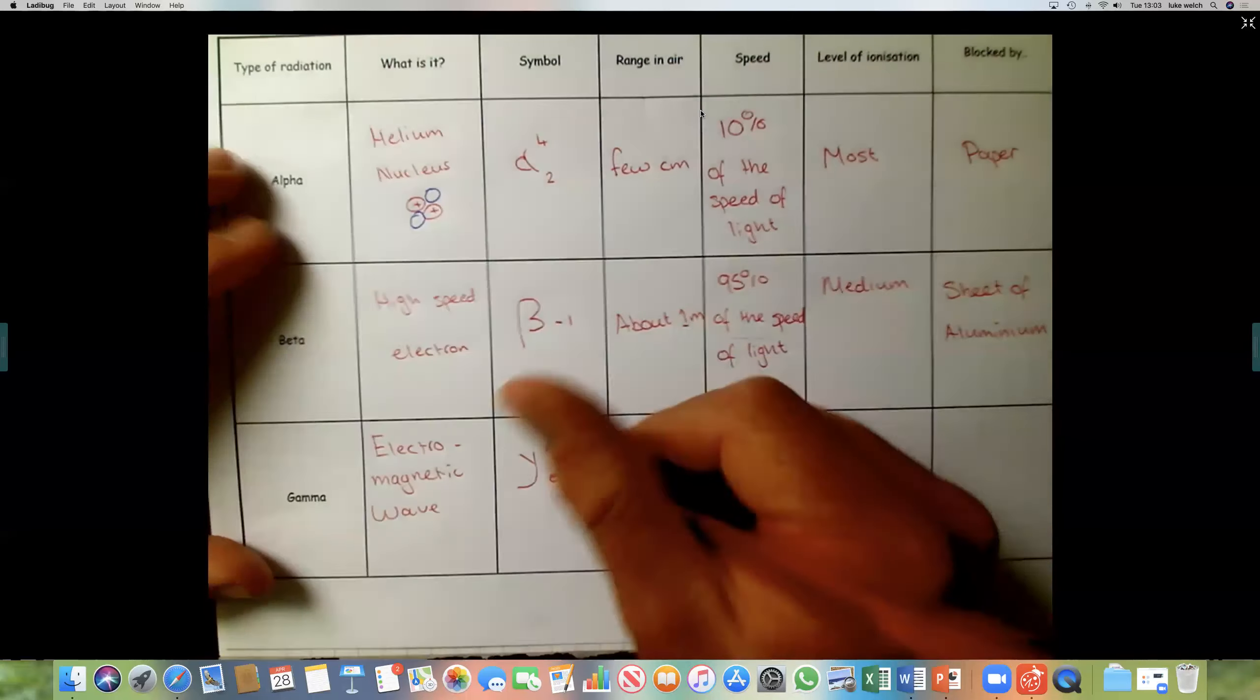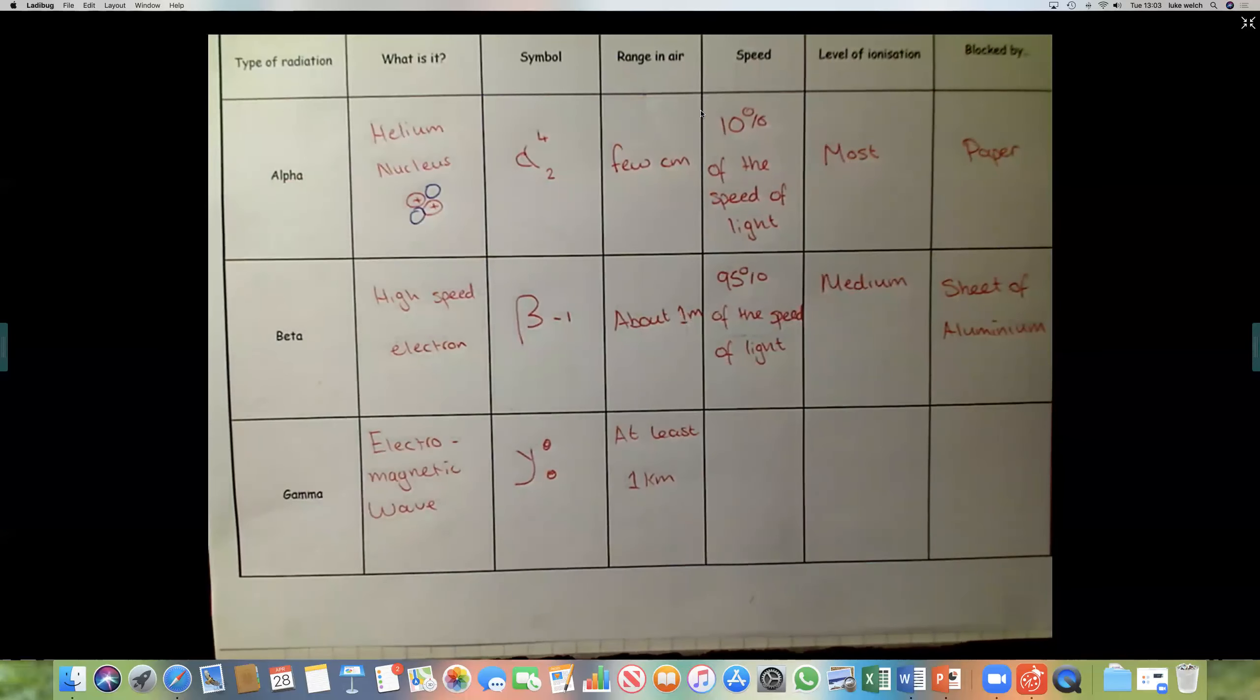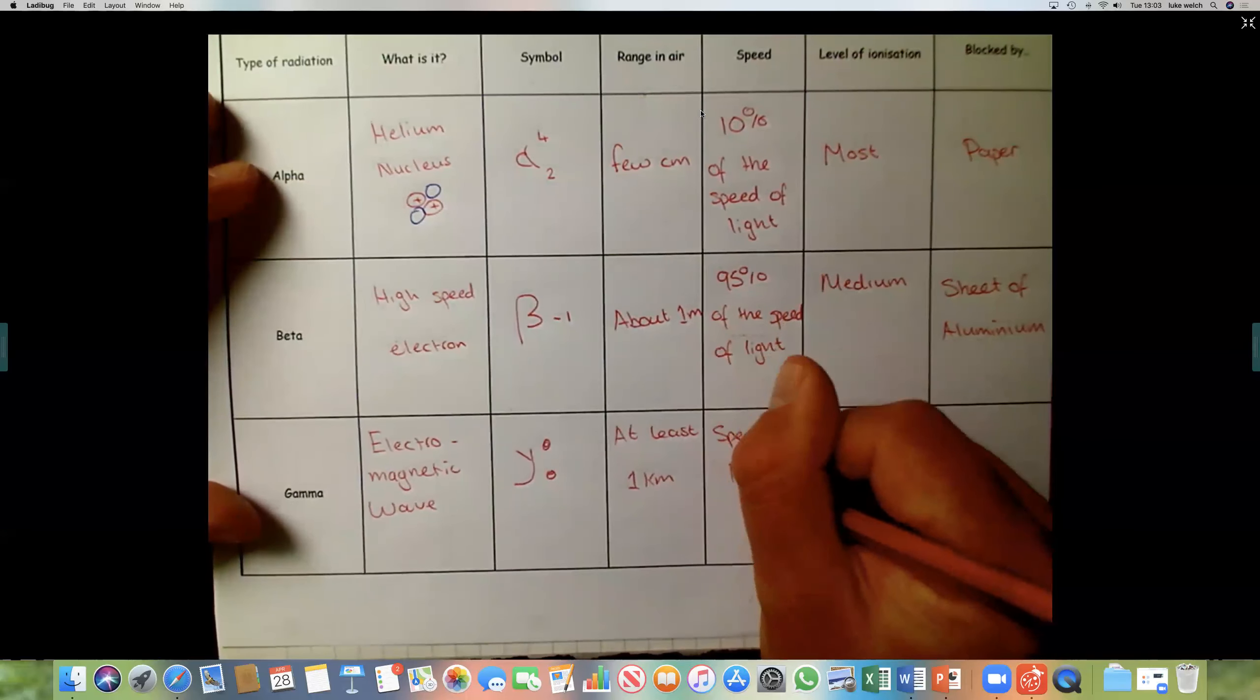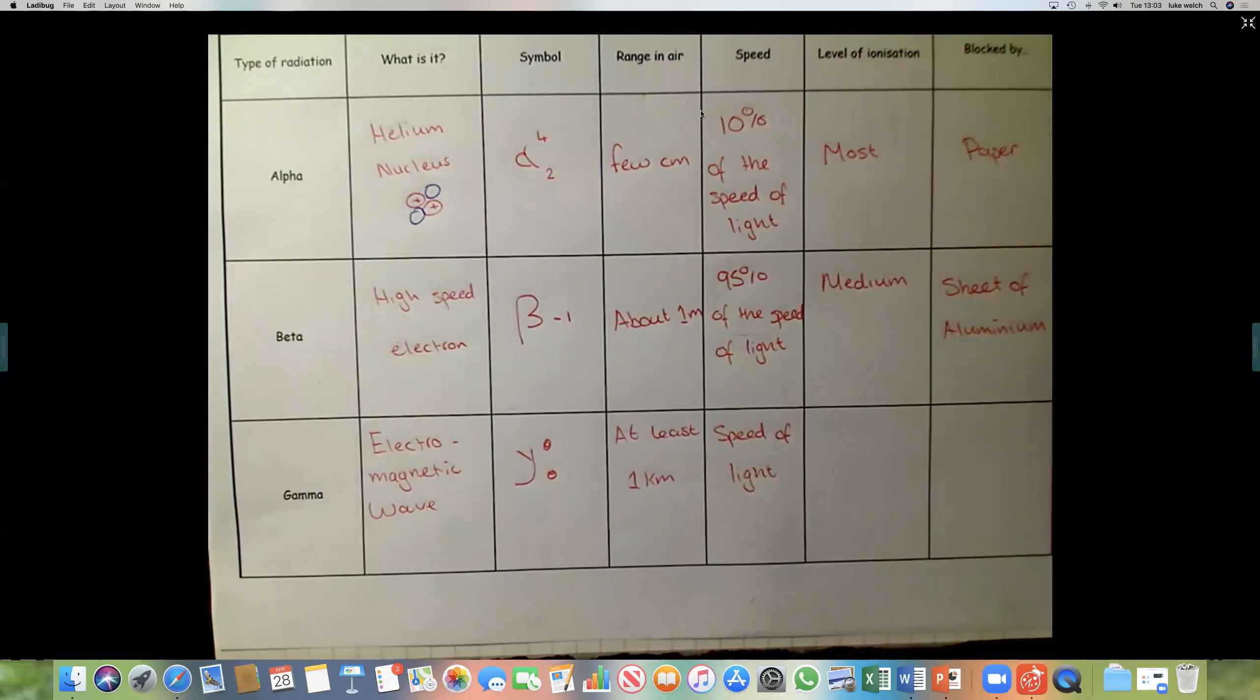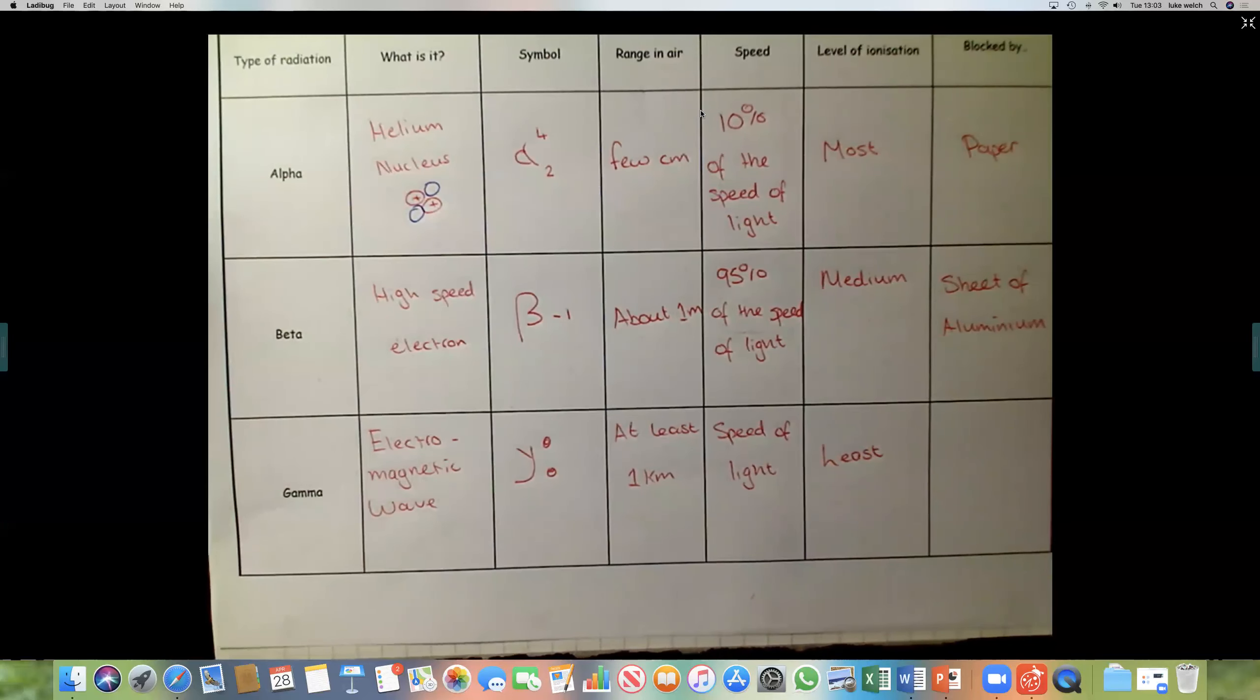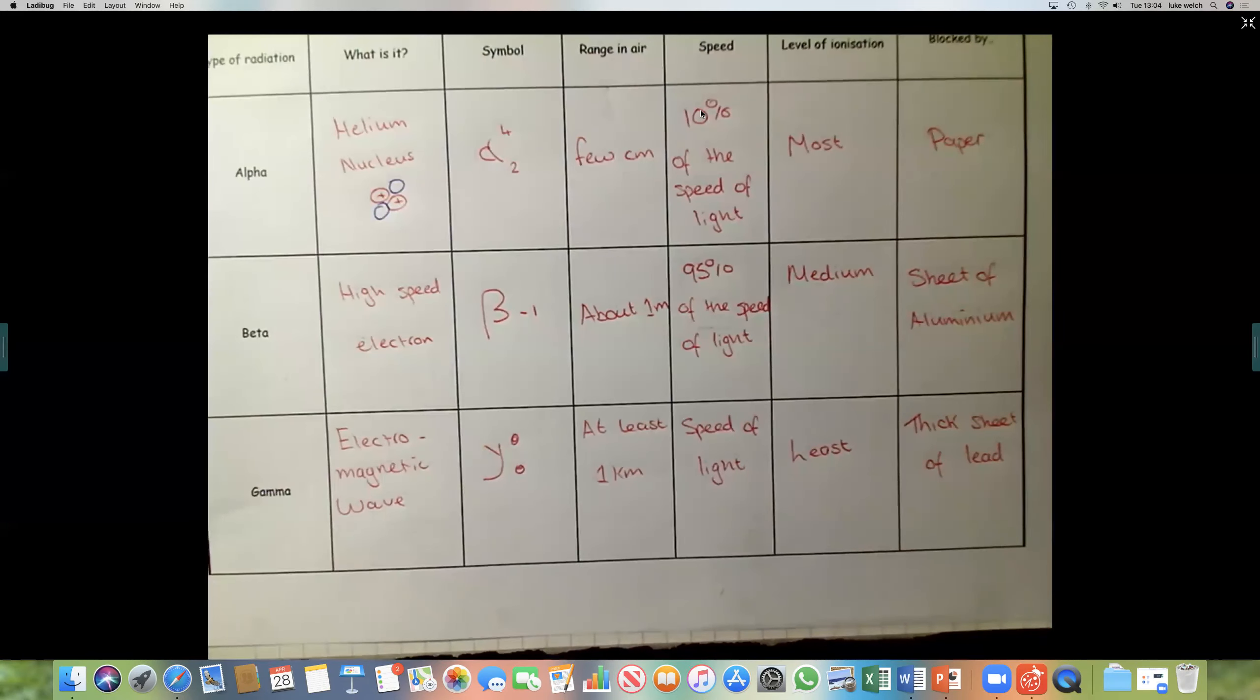Range in air, and this can travel a lot further, at least one kilometer. Speed is the speed of light, as it's part of the electromagnetic spectrum. Level of ionization, it is the least ionizing of all the types of radiation. And it's blocked by thick sheet of lead. And for anyone who's had x-rays, which is quite close to gamma rays on the electromagnetic spectrum, you'll know that you're given a lead sheet to protect any vulnerable parts of your body.